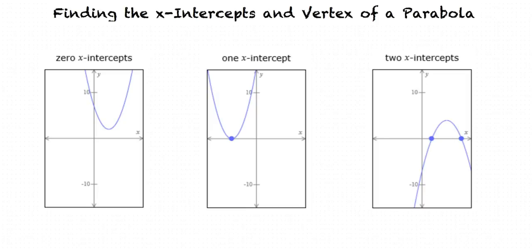At each point where a graph touches or crosses the x-axis, the y-coordinate is 0. To find the x-intercepts of a parabola, we let y equal 0 and solve the resulting quadratic equation. Can we look at this in the context of an example problem? Sure.